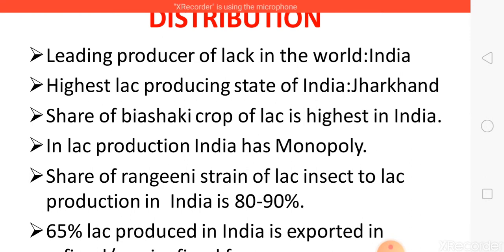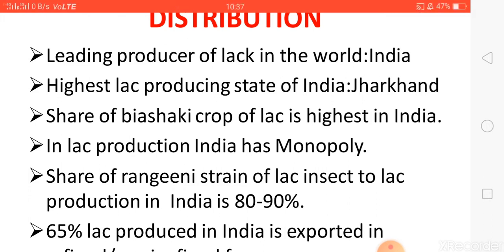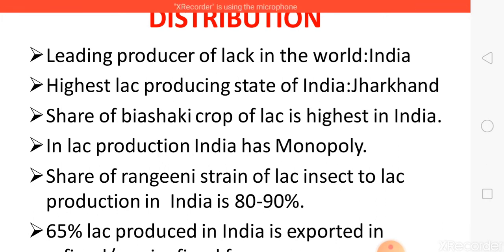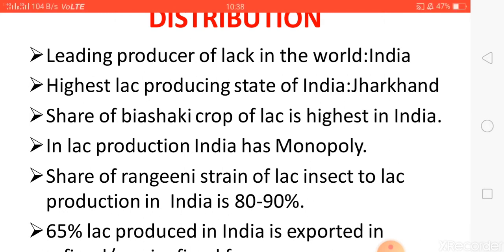Lac insects have more than 400 host crops. On the basis of this, we have divided two strains of lac insects: the Kosumi strain and the Ragini strain. On the basis of different crop seasons, we have Baisakhi crop and JTB crop. The share of Baisakhi crop of lac is highest in India.